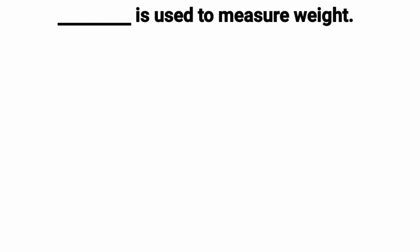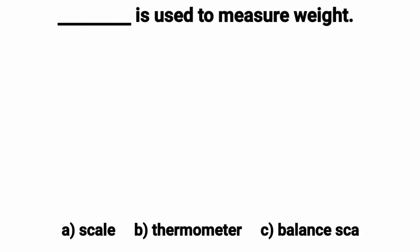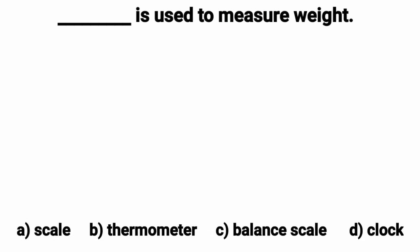Dash is used to measure weight. Here we have 4 options. Look at the options carefully. Option A is a scale or a ruler. Option B is a thermometer. Option C is a balanced scale and option D is a clock.